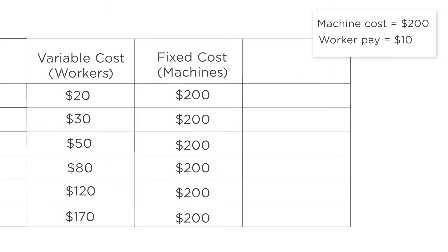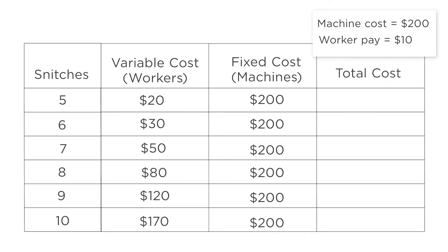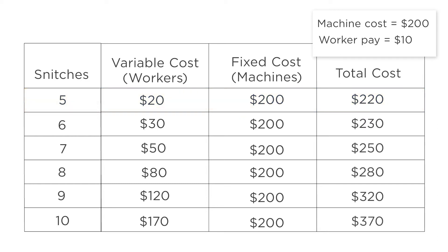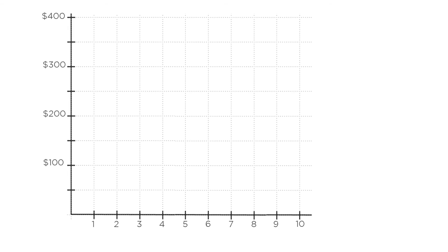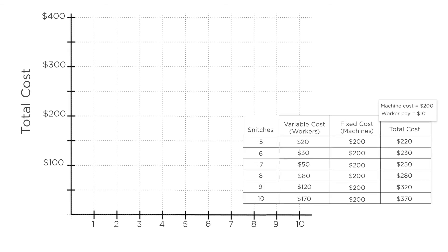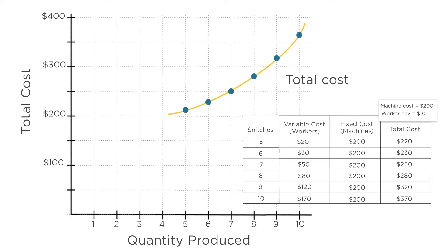So to produce five snitches costs $200 in fixed costs and $20 in variable costs, for a total cost of $220. We can compute the total cost for all the other production levels as well, and we can draw a graph with total cost on the vertical axis and the number of snitches produced on the horizontal axis. This is the firm's total cost curve, showing how total cost depends on the quantity of output.